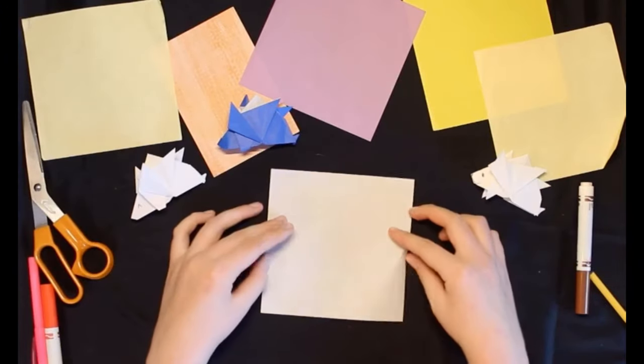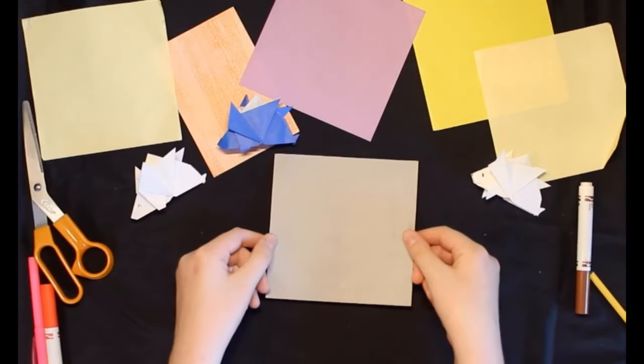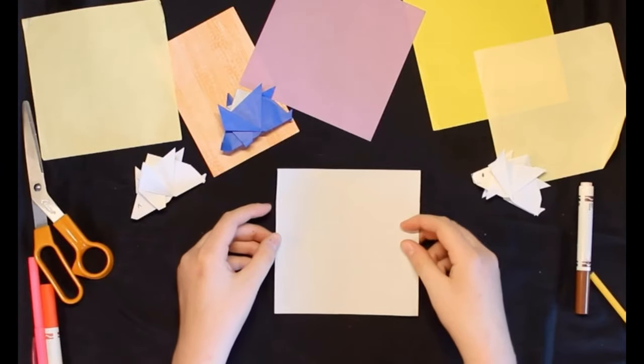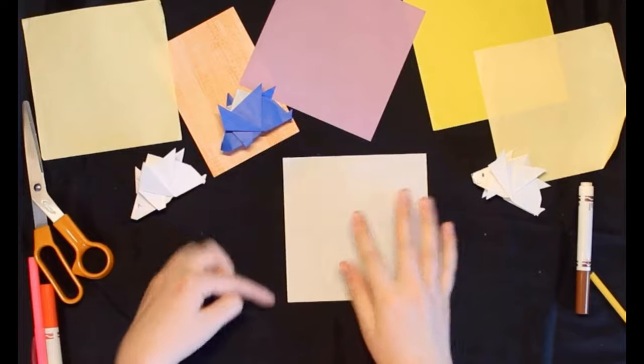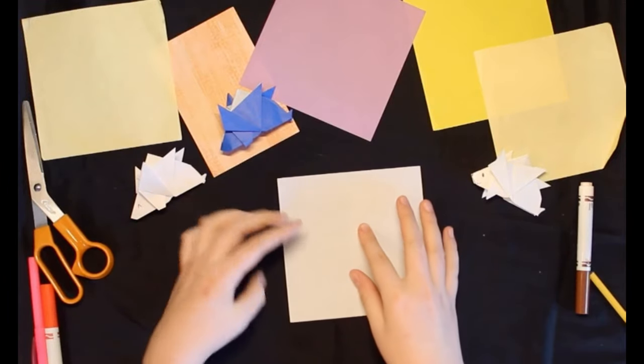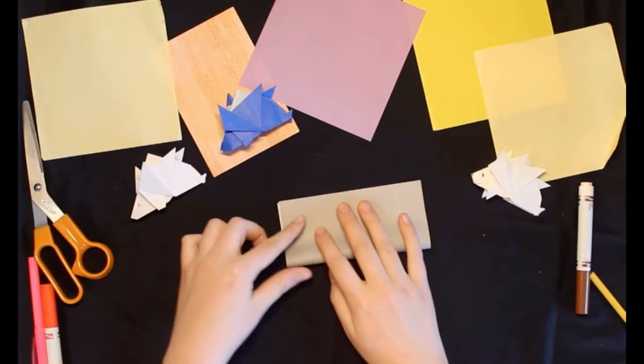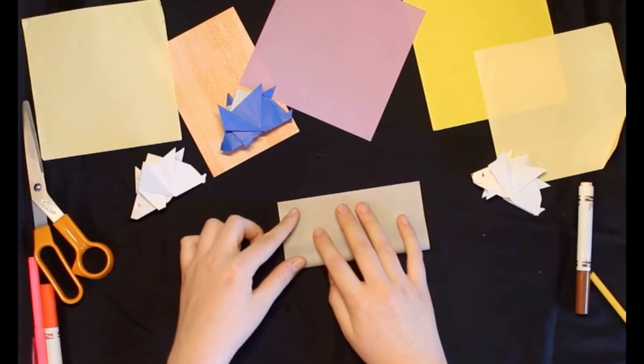All right, let's make some Origami Porcupines. So, you're going to take a square piece of paper and then you're going to fold from the bottom and match the edge up right to the top. Make sure to crease it really good so that we have strong folds and it's easier later on.